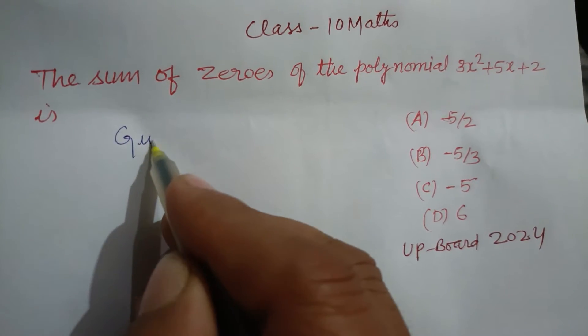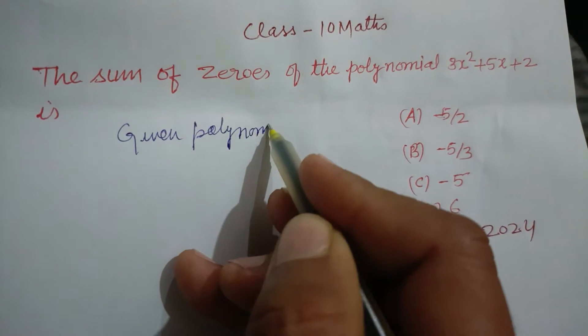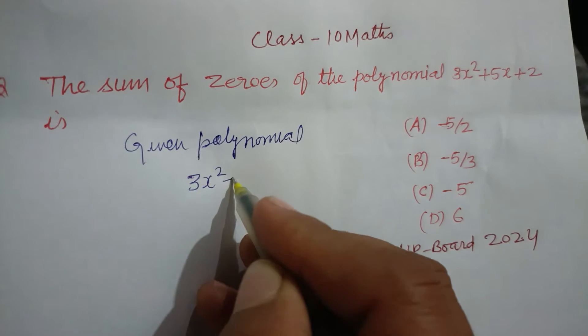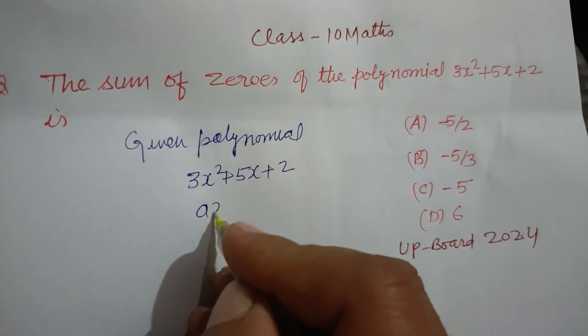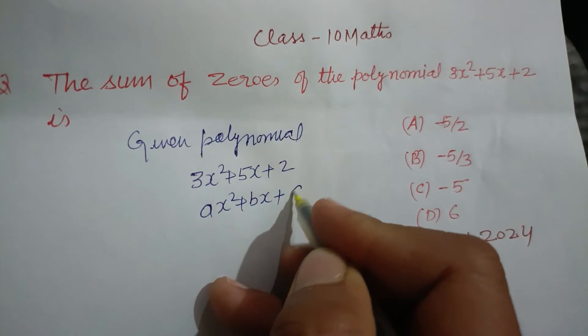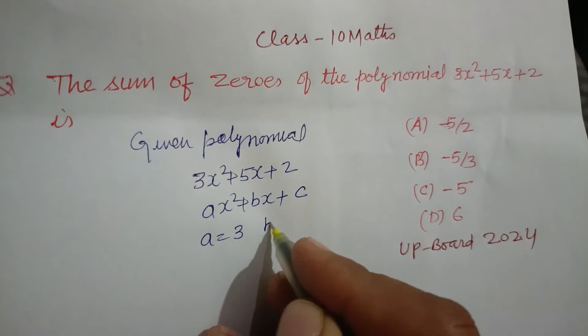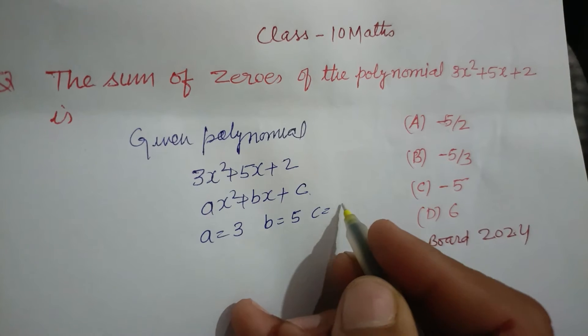So, given polynomial 3x² + 5x + 2. Here it is in the form of ax² + bx + c. So comparing, we got a equal to 3, b is 5, and c is 2.